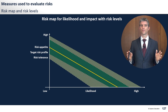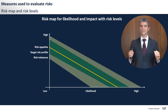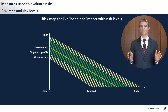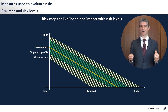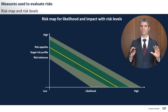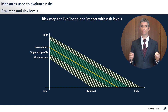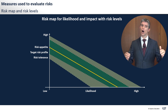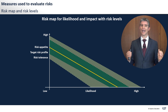I've graphed the likelihood and impact with different risk levels. We have this yellow line in the middle, which is your risk appetite — that's this little line. We have this green area, which is your target risk profile — the different points on this graph that we find to be acceptable.